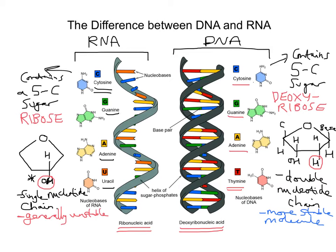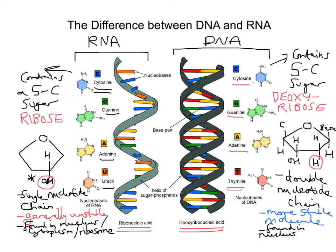RNA, depending on the type, is found in a cell's nucleus, its cytoplasm, and its ribosome — including what's called ribosomal RNA. In comparison, DNA is simply found in the nucleus of a cell and in the mitochondria.